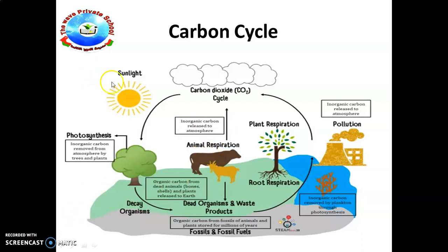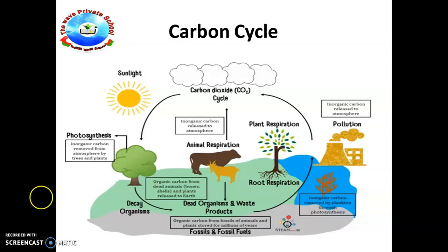Here you can see the carbon cycle diagram. From the sunlight, the process plants use is called photosynthesis — inorganic carbon is removed from the atmosphere by trees and plants. We are going to describe the carbon cycle, covering photosynthesis, respiration, feeding, decomposition, fossilization, and combustion.